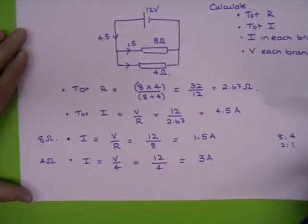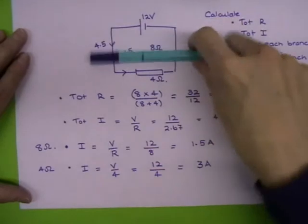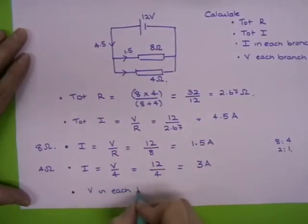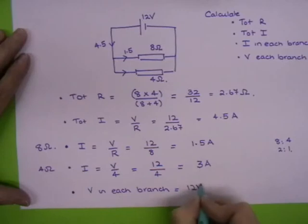Last wee bit, the voltage in each branch is very easy. Voltage in each branch is just the same as the battery. So the answer to the last one, voltage in each branch or across each branch, is equal to 12 volts.